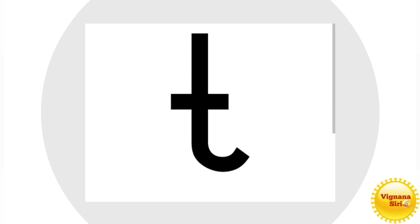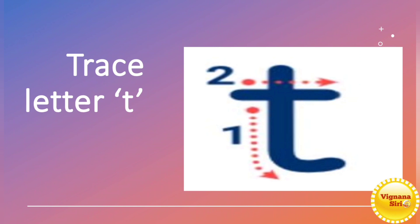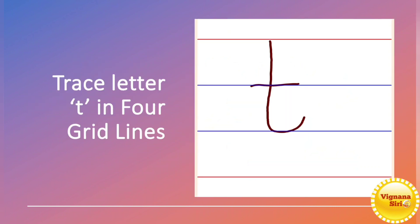Today we will learn the small letter T. So how to trace the small letter T? A standing line with a small curve towards your right and a sleeping line in the middle of the standing line. And in the four grid line, you have to write the small letter T in the first three lines.